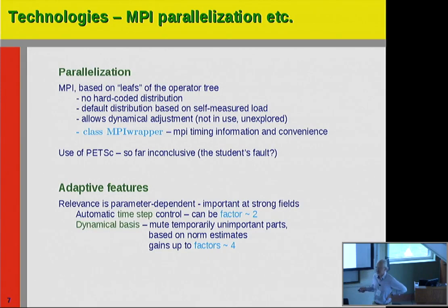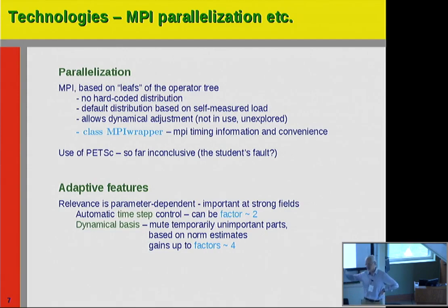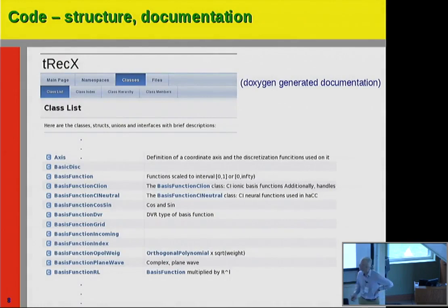It has some adaptive features — some dynamic basis feature. We switch off parts of the operator that we know at the moment don't have any effect. And if the norm comes up of that part of the vector, we switch it on. That gains factors, as you know — people play these games all over.